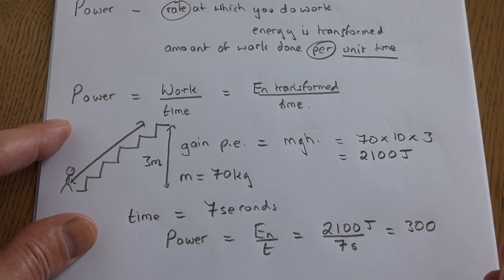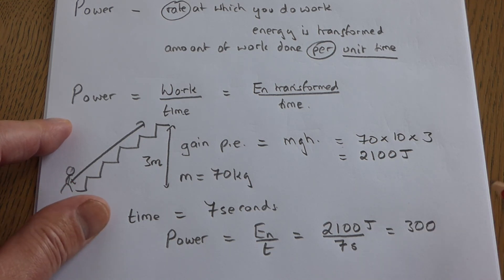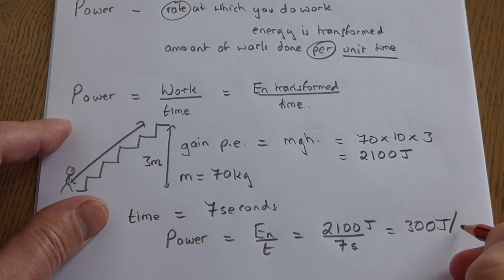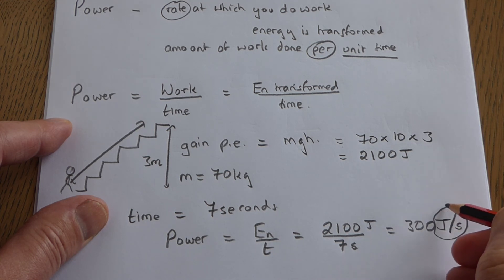You then do the usual thing: 300 watts. And you're dividing joules by seconds, so you've got joules divided by - there's the slash again - divided by seconds: joules per second. And joules per second, they are called watts.